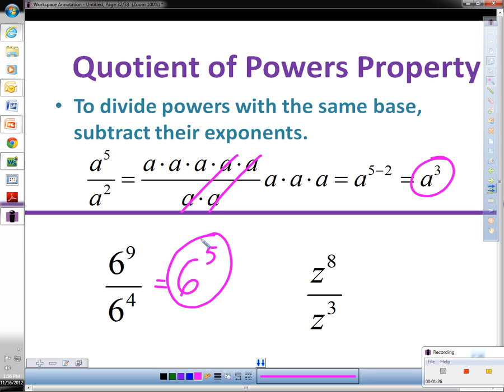In this example with the z's, we have the same base of z, so we can subtract them. The exponent is eight on top, we subtract three on the bottom, we end up with five left over, z to the fifth power.